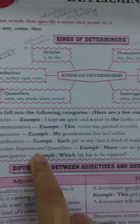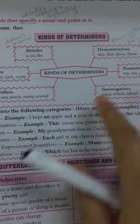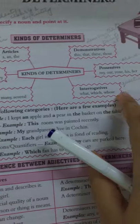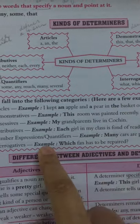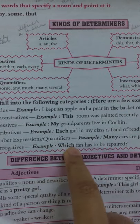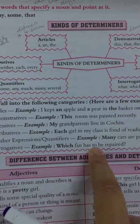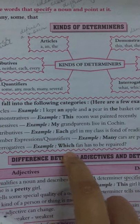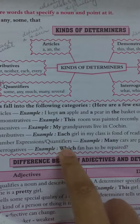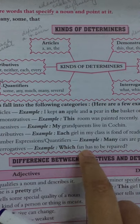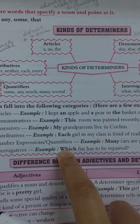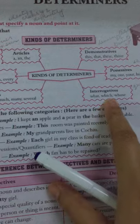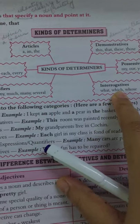For interrogatives: Which fan has to be repaired? Interrogatives are easy to identify because they refer to questions. This sentence begins with the word 'which.'